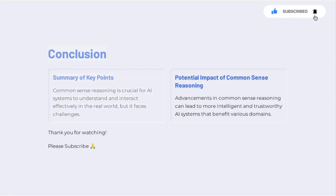Conclusion. Common Sense Reasoning is crucial for AI systems to understand and interact effectively in the real world, but it faces challenges. Advancements in Common Sense Reasoning can lead to more intelligent and trustworthy AI systems that benefit various domains.